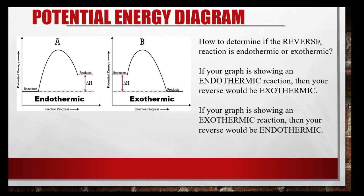How do you determine if the reverse reaction is endothermic or exothermic? If your forward reaction is endothermic, then the reverse is exothermic — it's just the opposite. And if your beginning reaction is exothermic, then it is endothermic on the way back. Notice on the graph: if we go backwards, what were products are now my reactants — they would be lower — and my products would be higher. So that's why the reverse would be endothermic. It's basically just the opposite.